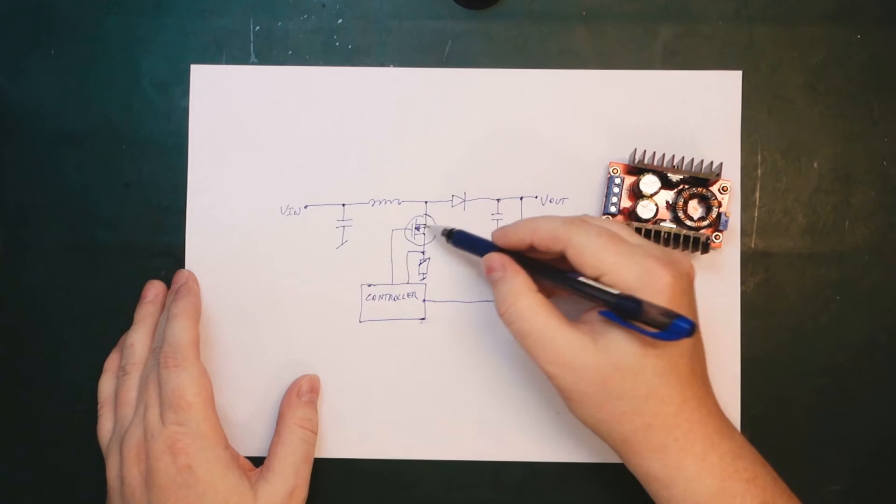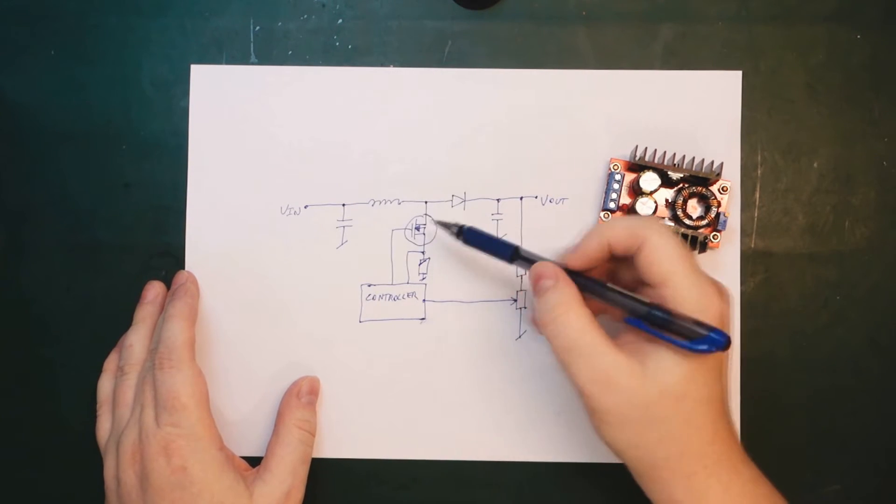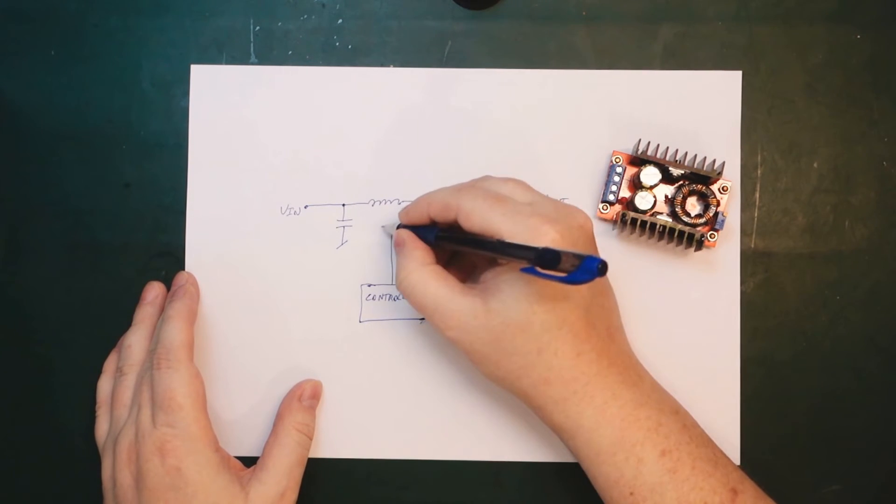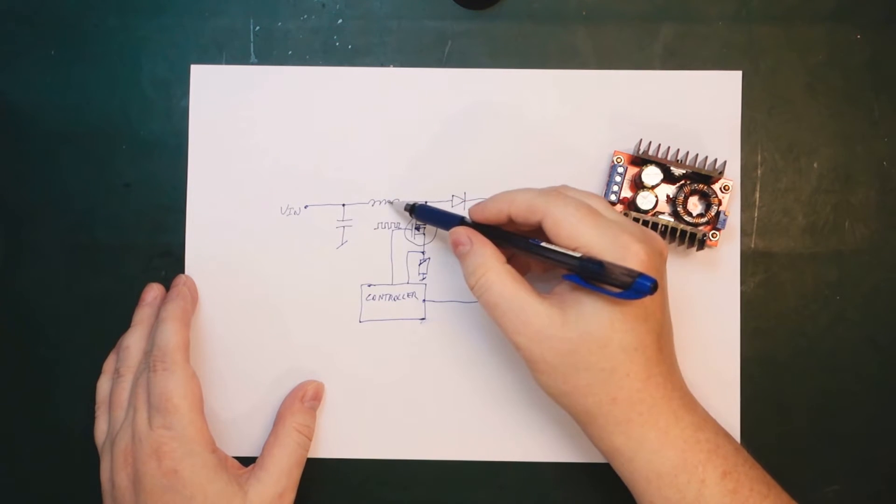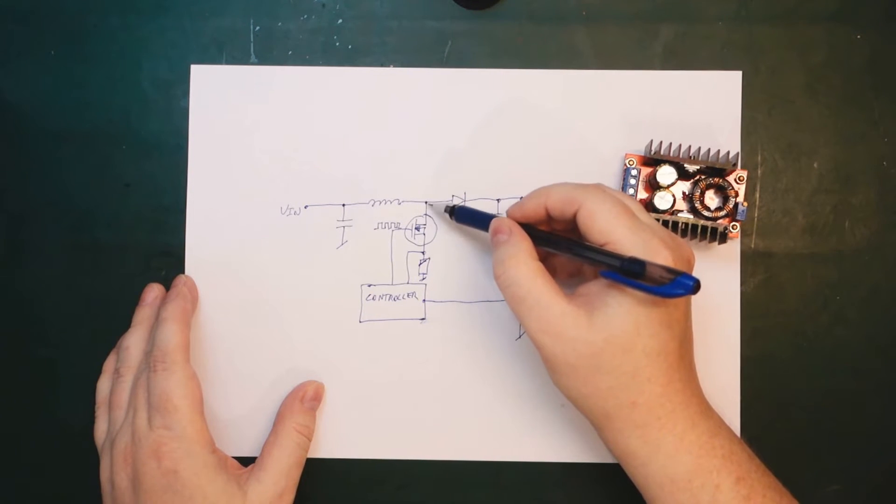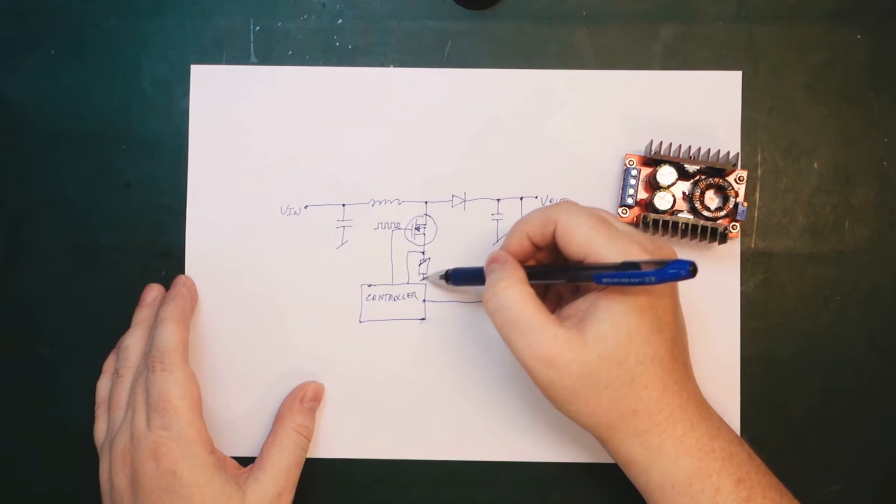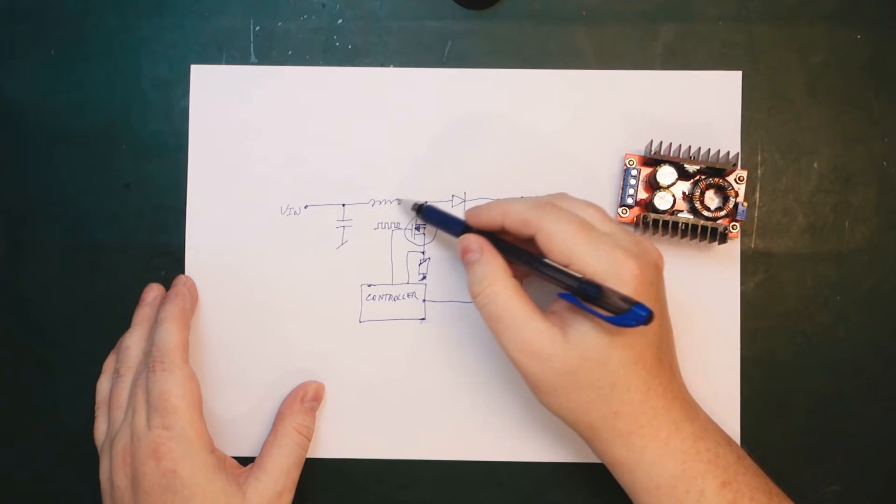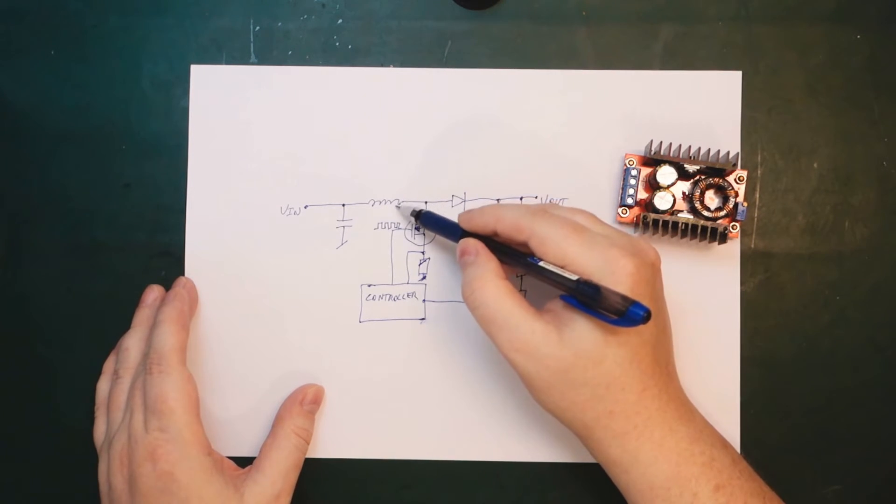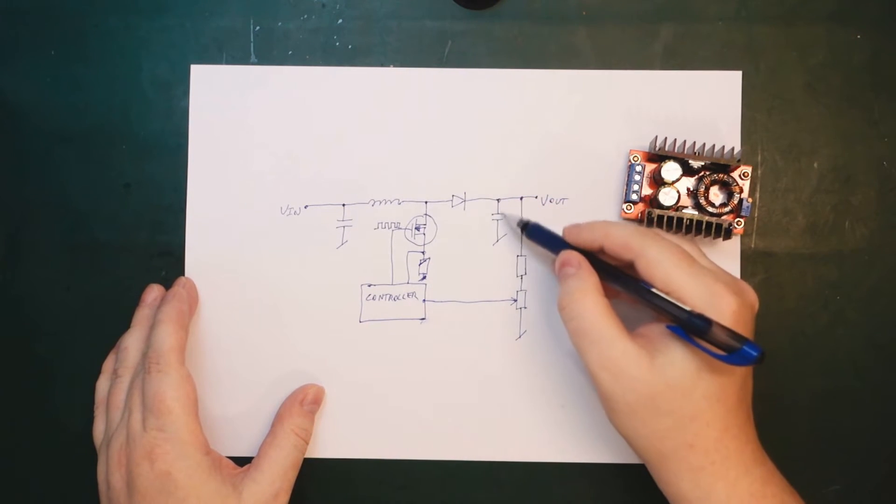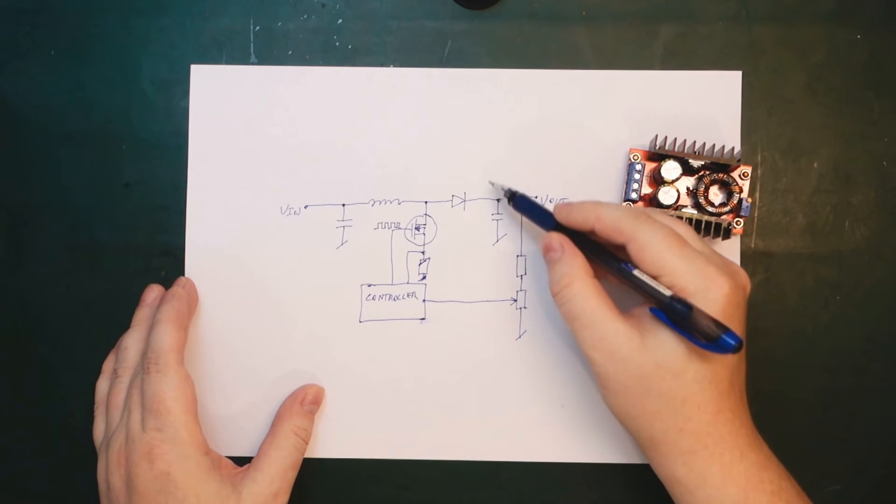The way it works is basically, the controller will generate a PWM signal here. That will then charge up the inductor. Every time we short, nearly short, pretty much short to ground here, the inductor will be charged up. So we release it. Then the inductor will shoot out a voltage here. It goes into the filter capacitor.